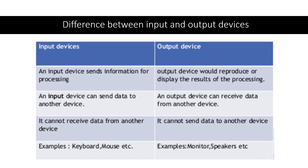Let's take an example of a keyboard. Using the keys, you type any text and that text will be processed and displayed on the monitor, which is the output device. The second difference is an input device can send data to another device, and an output device can receive data from another device. The third difference is input devices cannot receive data from another device — it's only the output device which receives the input.